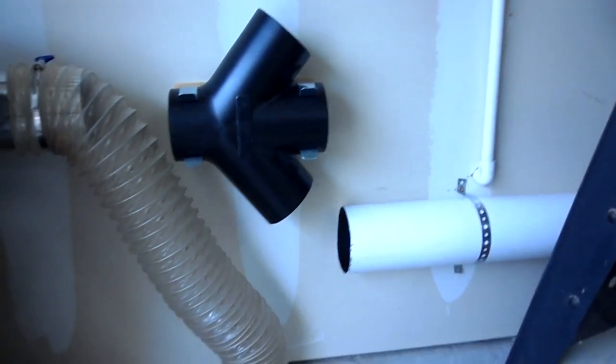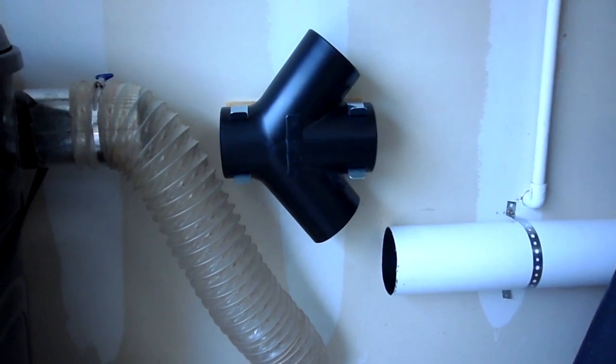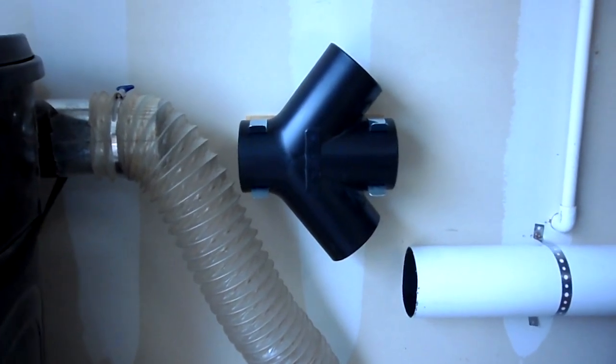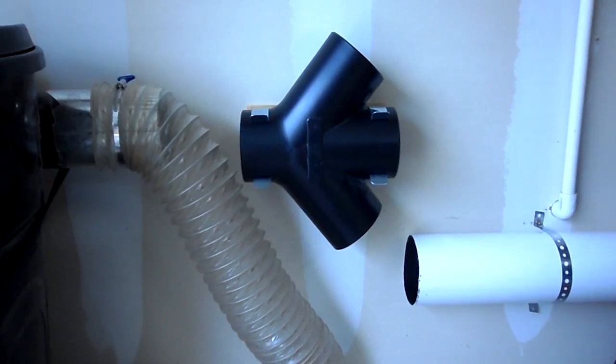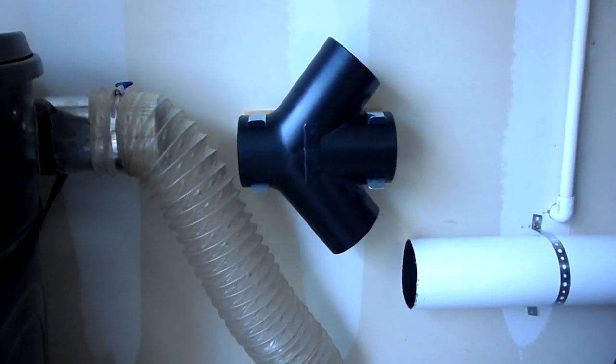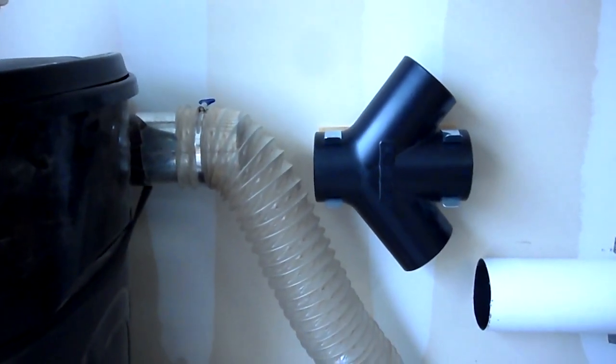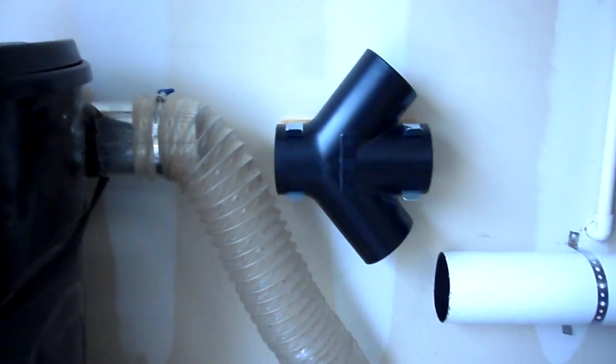Because I'm using this thinner drain pipe, they don't really make fixtures, elbows, or couplers for this type of pipe. I was attempting to use heat to bend the pipe, but the stuff is just too thin and it actually just wants to buckle on itself. So what I'm going to do is just use flex hose for my joints.